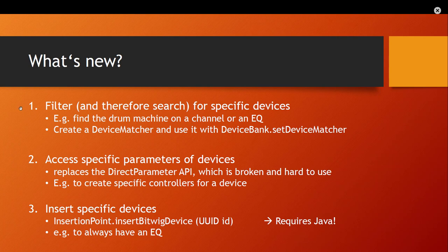There are three aspects addressed in the API 12 update. First, we can filter for specific devices — for example, find a drum machine or an EQ on a track. An application could automatically insert an EQ on a channel, or if you press a button and it's not already there, it adds an equalizer. Second, you can address specific devices — for example, build a controller that always controls the equalizer or a specific plugin.